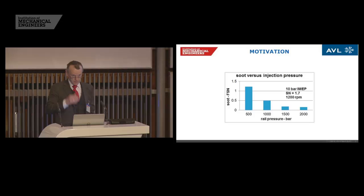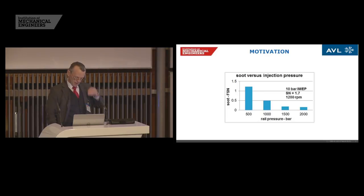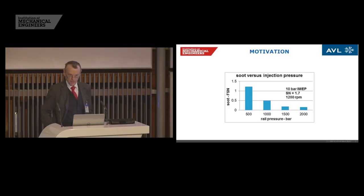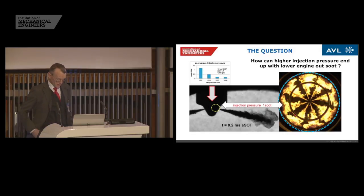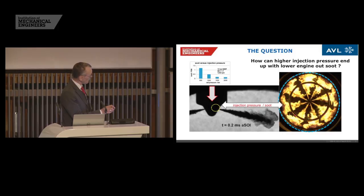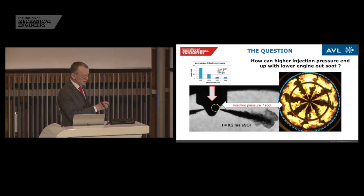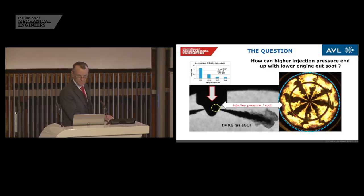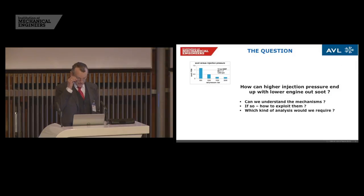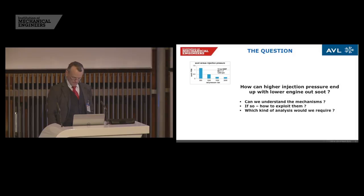I think I do not need to motivate what we do here, and I certainly do not need to motivate higher fuel injection pressures. But I want to use this chart with tailpipe soot measurements to consider why higher fuel pressure really ends up in less soot. Fuel pressure acts across the length of the needle, and soot is what we find in an optical engine where soot clouds appear. In the end it is these soot particles which have to mix with the air. So this was my starting point: how can higher injection pressure end up with lower engine-out soot? Can we understand the mechanisms? I hope so.